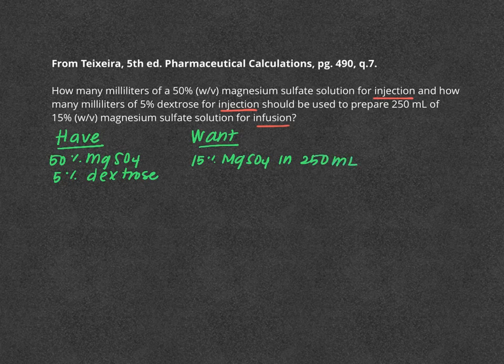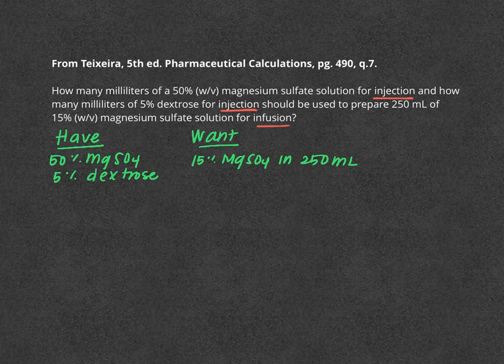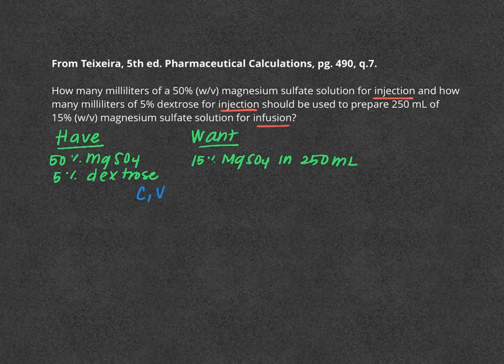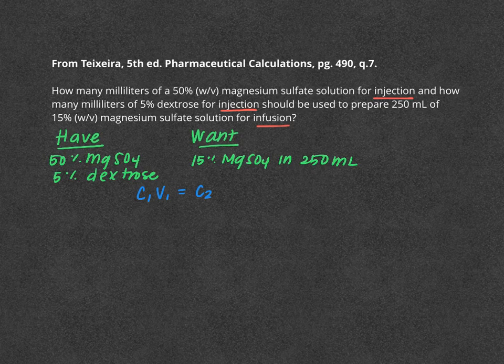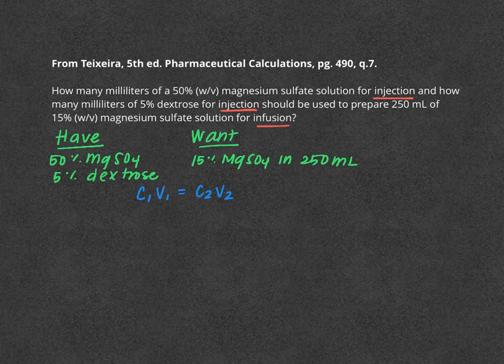We're going to think back to our old equations and all of the tools and resources we've learned so far. We're going to think about that old friendly equation, the C1 concentration one times volume one is equal to C2 times V2. And our haves, we're going to remember that the 50% magnesium sulfate is our initial concentration. So we can go ahead and set up the equation as such.